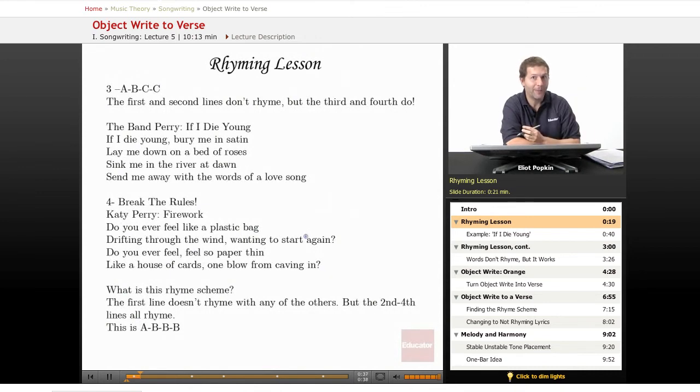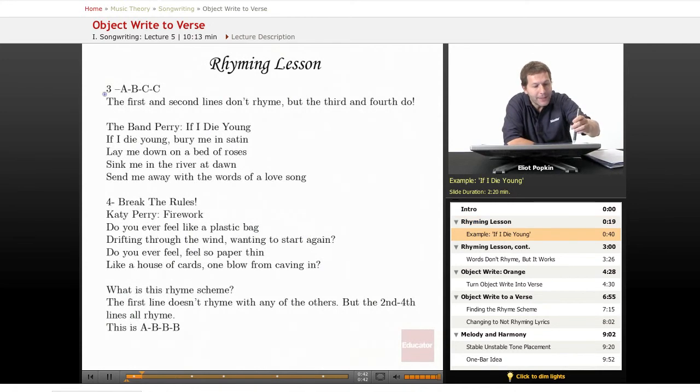Let's look at one more example. This is ABCC, where the first and the second lines don't rhyme, but the third and the fourth ones do. And we'll look at an example. This is a song, this is an amazing song in case you haven't heard it. It's by a group called the Band Perry. It's called If I Die Young. So here's the lyric.